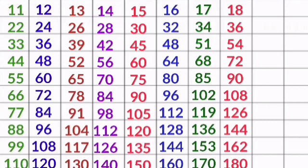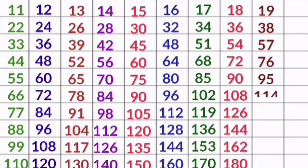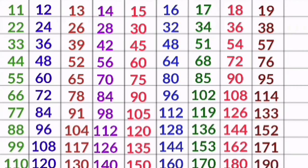19 1s are 19, 19 2s are 38, 19 3s are 57, 19 4s are 76, 19 5s are 95, 19 6s are 114, 19 7s are 133, 19 8s are 152, 19 9s are 171, 19 10s are 190.